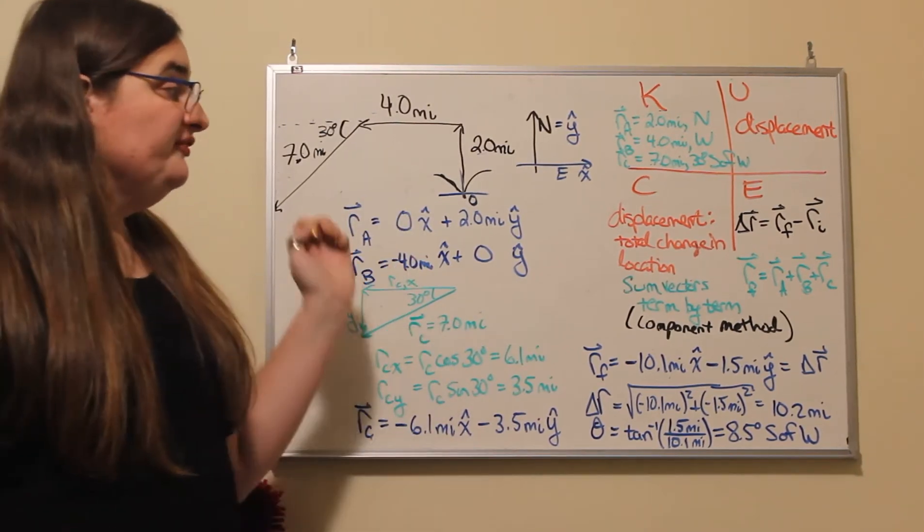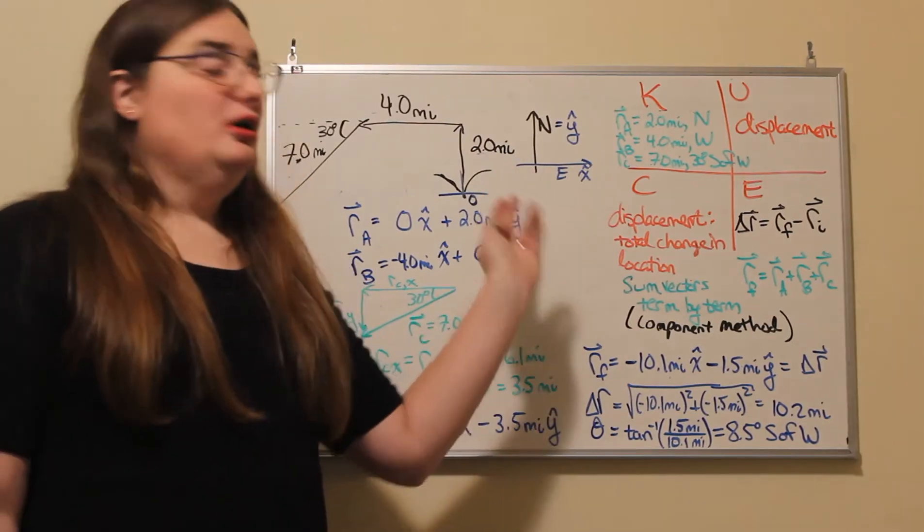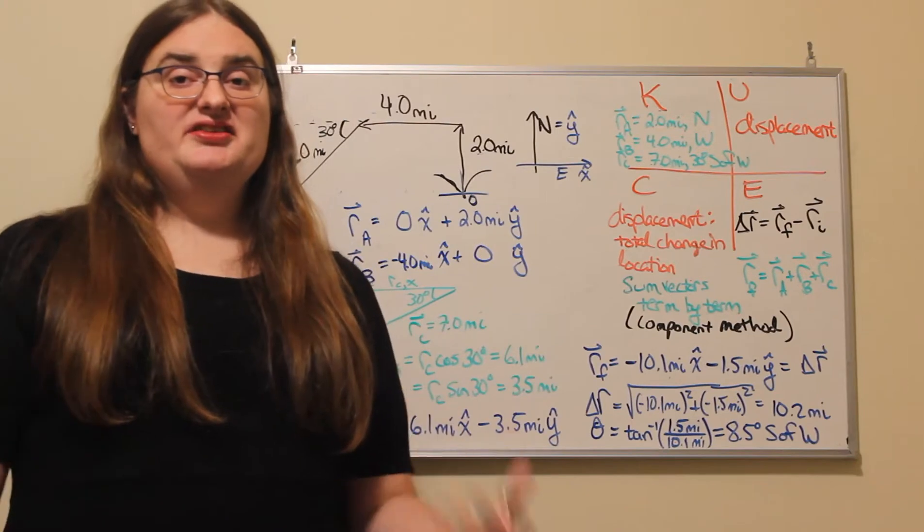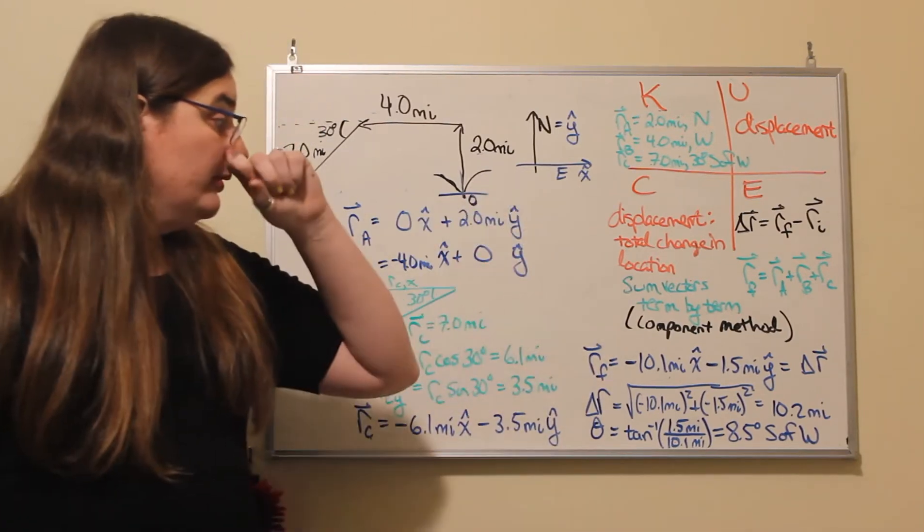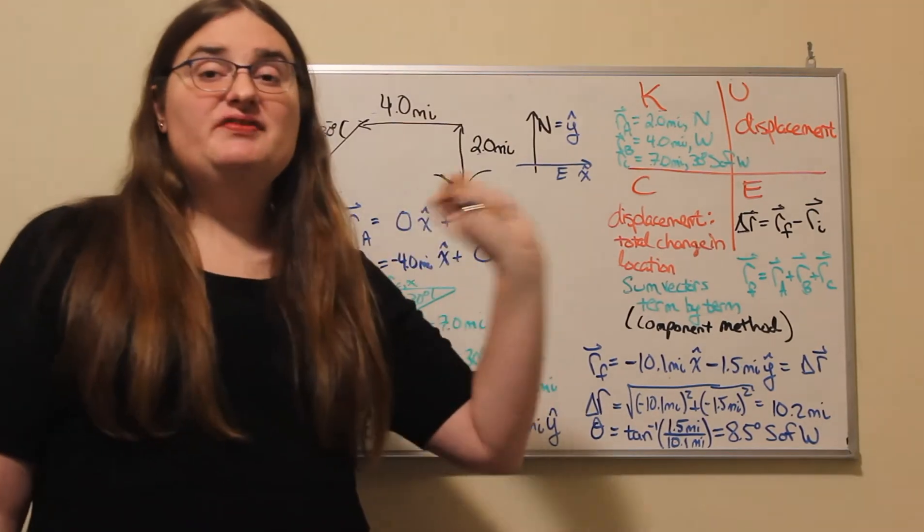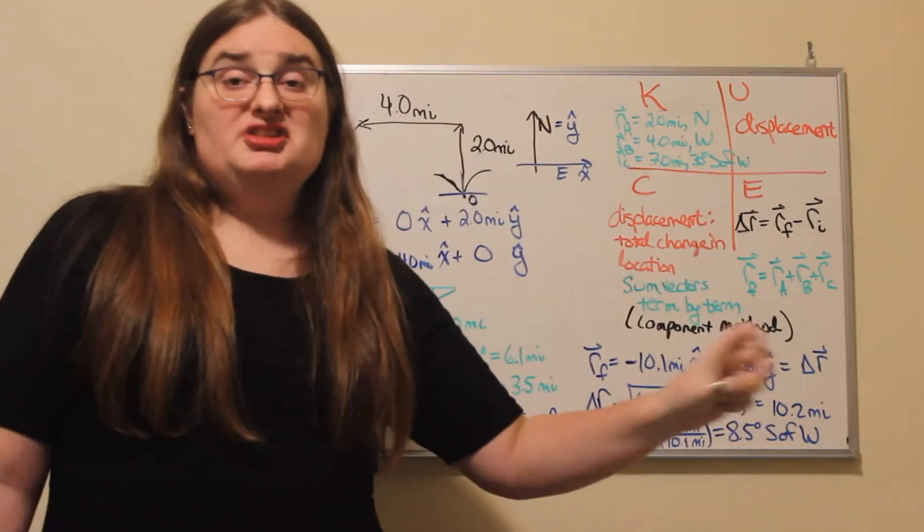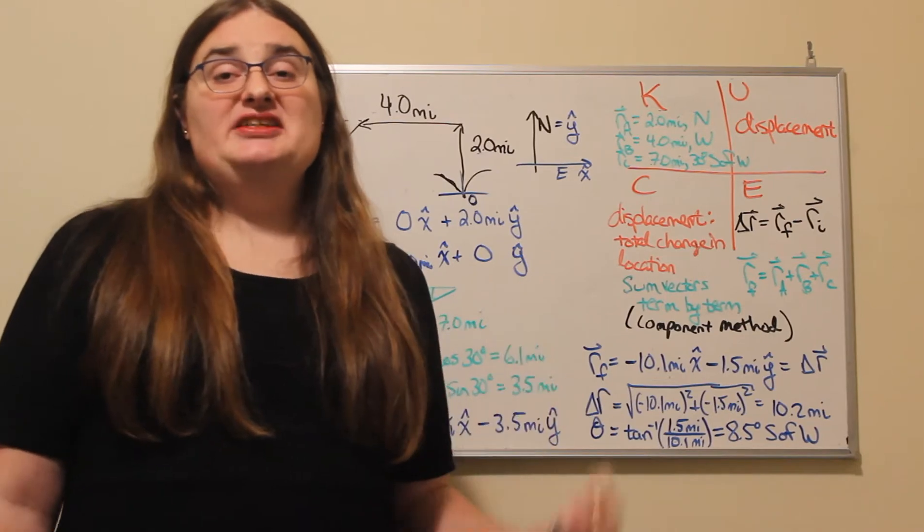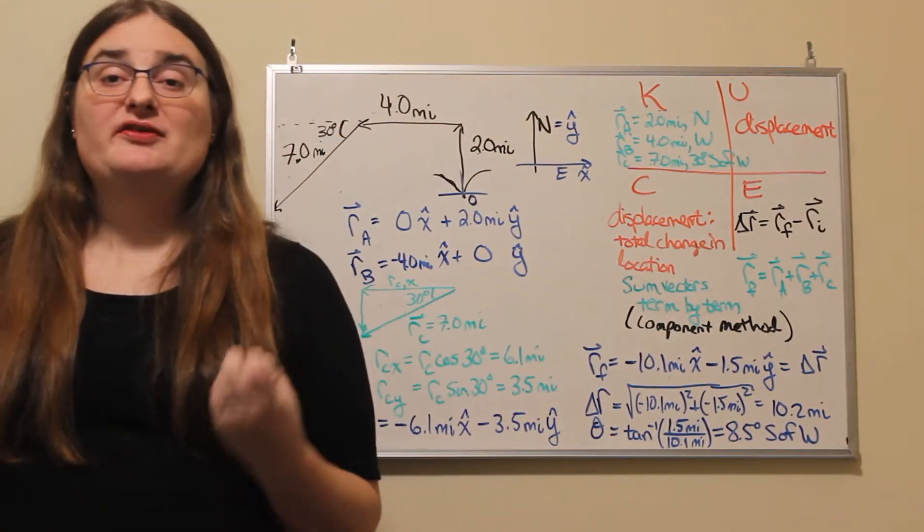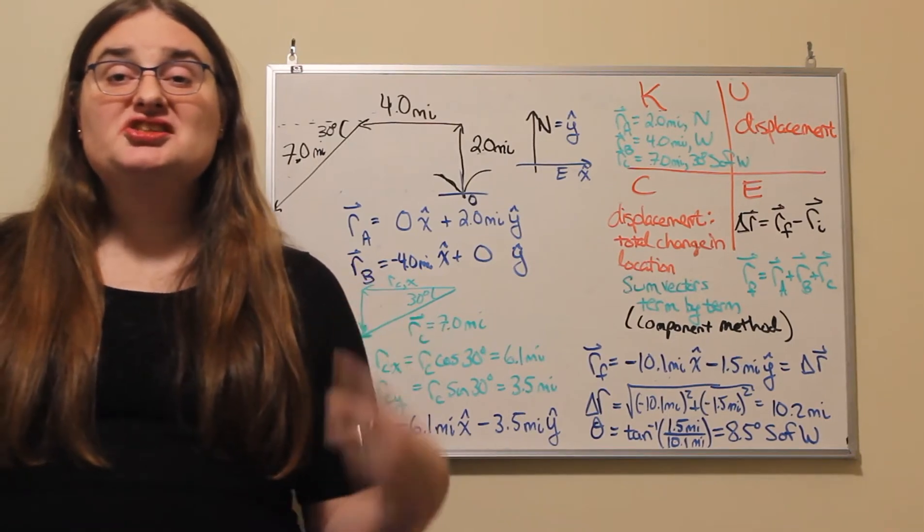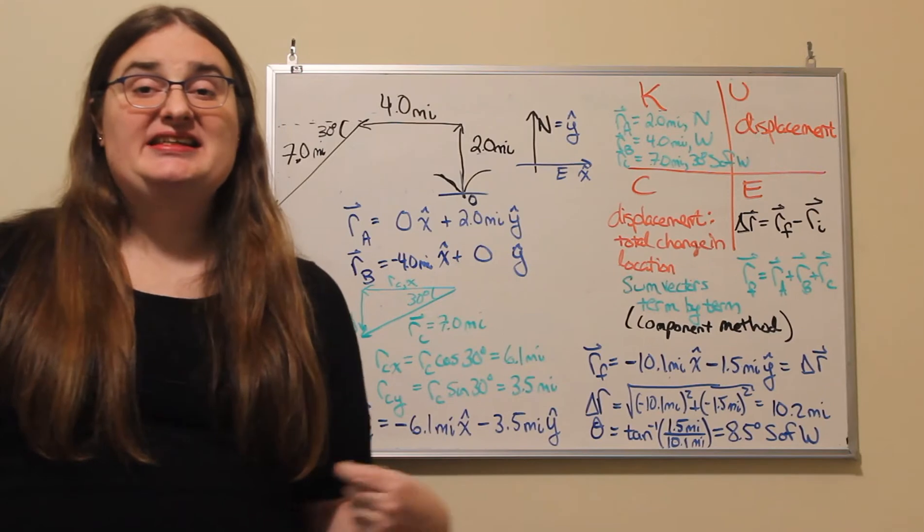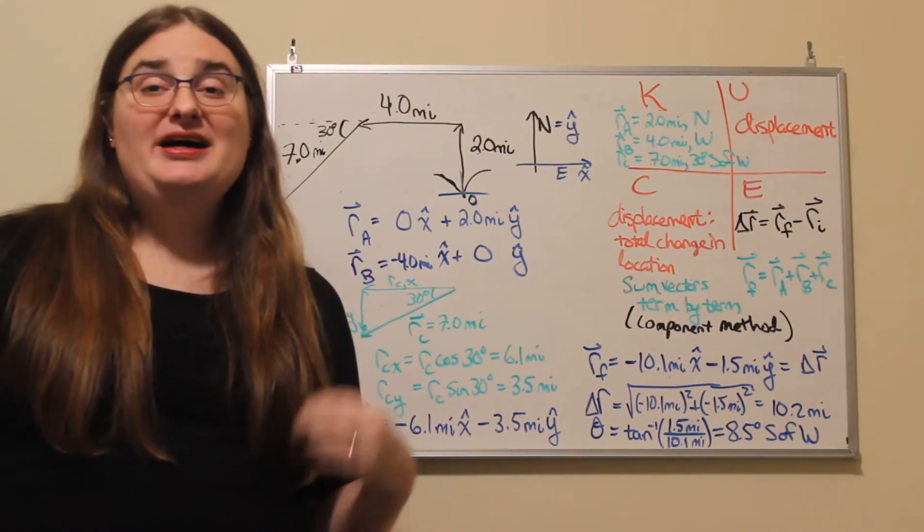So whatever our final position is, our displacement would just be that final position minus zero. And we can find that final position by summing each individual displacement. We can write that displacement as a vector and use the component method for that sum, where we just sum term by term. The way I like to say it is what happens in x stays in x, what happens in y stays in y.